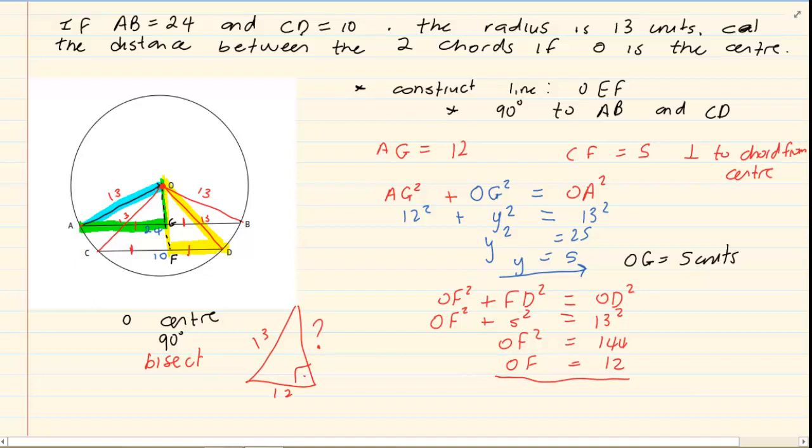Now, what do they want to know? We have a line. It's O, it's G, and it's F. Now, we have that OG is 5. And then we have that OF, the entire line, is 12. They want to know, what is the value of FG? Now, this is standard calculation. 12 minus 5 will give us 7 units. So, what is the distance between the two chords? The distance between the two chords is 7 units. So, GF is equal to 7 units.